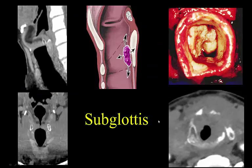Finally, the subglottis is formed by the signet ring cricoid cartilage. When you look at the subglottis, you look for the big O — the formation of the complete signet ring with no cricoarytenoid joint visible. On parasagittal images, here's the undersurface of the true vocal cord, the cricoid cartilage airway, and the shoulder-shaped appearance of the subglottis. This is a pathologic section and imaging example of a primary subglottic carcinoma. When you see the signet ring, you know you're at the subglottis.